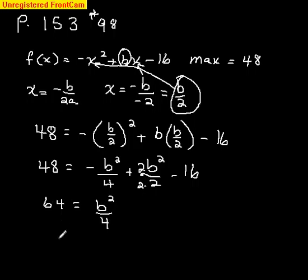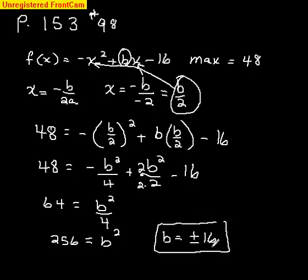Cross multiply and we get 256 equals b squared. And if you take the square root of both sides, you get b equals plus or minus 16. And that is your answer for b that will give you the maximum value.